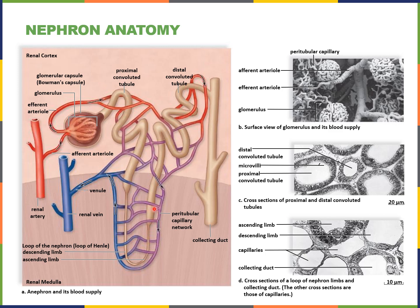From the Loop of Henle, filtrate goes up into the distal convoluted tubule where more ion regulation occurs, and then into the collecting ducts where even more regulation happens, mostly controlled by hormones. At this point, the filtrate transitions into urine. Once it becomes urine, it goes into the ureter, then into the bladder, and out through the urethra.